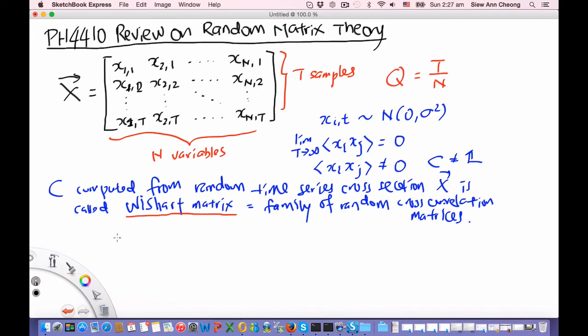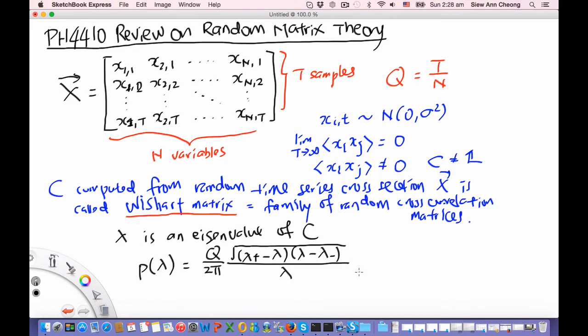So if I compute the eigenvalues, let's say that the eigenvalue lambda is an eigenvalue of C, then statistically speaking, lambda is distributed according to a distribution function and this distribution function is given as P(lambda) = Q/(2π) * sqrt((lambda+ - lambda)(lambda - lambda-)) / lambda, where lambda+- = 1 + 1/Q +- 2/sqrt(Q).